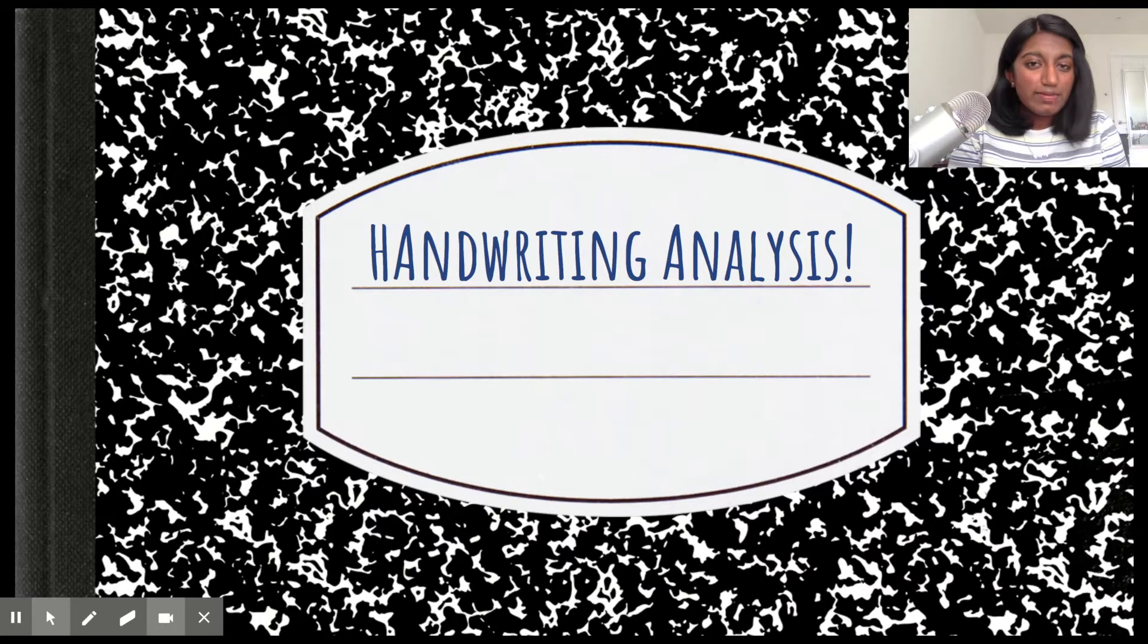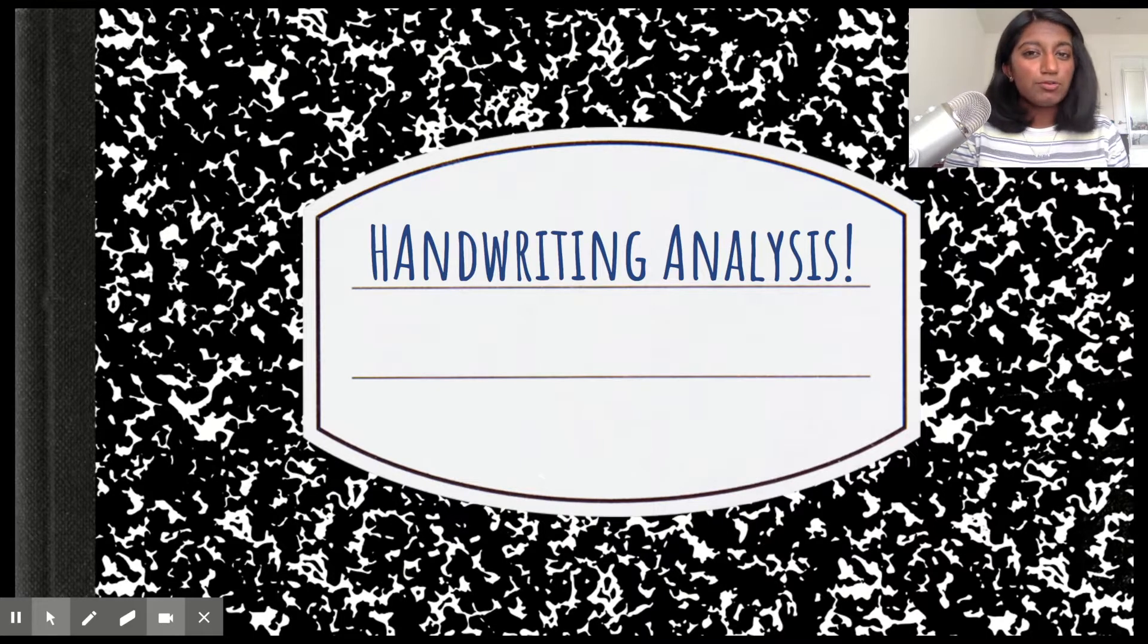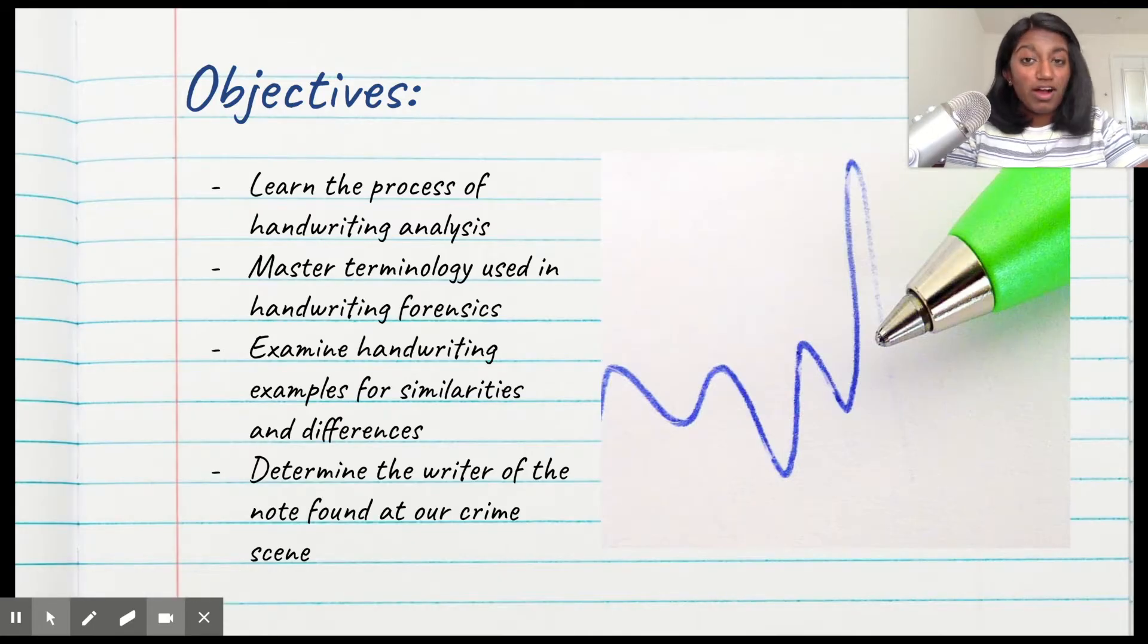Today we're going to be talking about handwriting analysis. As you know, there was a note left at the crime scene next to Flowers and June Bugs dresser that said 'don't go, it will be a mistake.' So we're going to figure out who wrote that using our handwriting analysis skills. By the end of this presentation, you will have learned the process of handwriting analysis, mastered the terminology used in handwriting forensics, and by the end of our lab, you will have examined handwriting examples for similarities and differences and determined the writer of the note found at our crime scene.